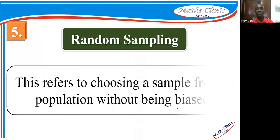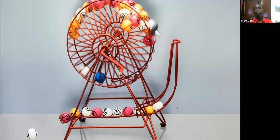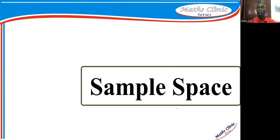Another important term is random sampling. Everything we study about probability involves random sampling, as we do not want any bias. Random sampling refers to choosing a sample from a population without being biased. For example, using a lottery machine where all balls are the same size and material — when rolled, any ball can come out fairly. That is random sampling.